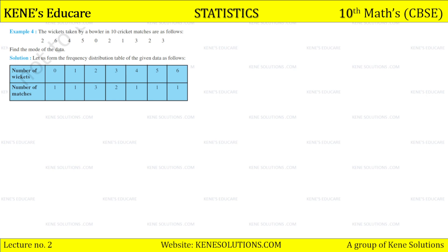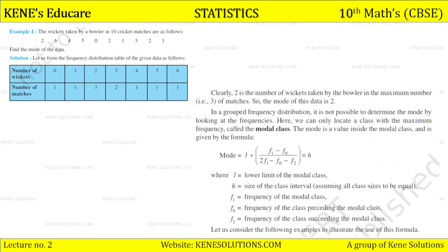First we made the frequency distribution table. Clearly 2 is the number of wickets taken by the bowler in the maximum number of matches — it appears 3 times, so this frequency is the highest. In a grouped frequency distribution it is not possible to determine the mode by just looking at the frequencies; we can only locate the class with the maximum frequency, called the modal class.